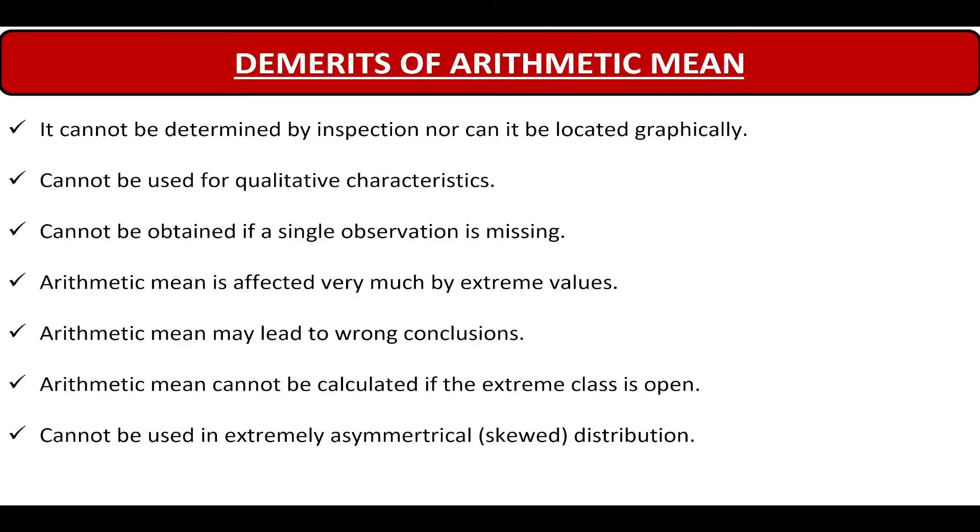Now, coming to the demerits of arithmetic mean. Firstly, it cannot be determined by inspection nor can it be located graphically. For example, like a mode can be determined by observation or graphically, arithmetic mean cannot be determined.